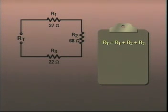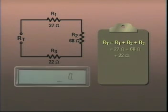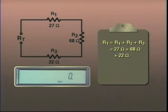Substituting the values of the resistors in this formula and keying them into a calculator, we would have R sub t equals R1, which is 27 ohms, plus R2, 68 ohms, plus the value of R3, 22 ohms. The total resistance equals 117 ohms.